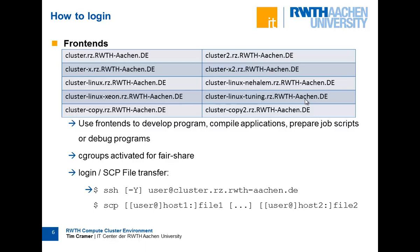We also have two special-purpose front-ends: cluster-copy and cluster-copy2. As the name suggests, these are intended for copying data — for example, if you want to copy data within the cluster or transfer large chunks from external locations. Use these front-ends because they have better network capabilities. You can log in with SSH from Linux, or use PuTTY or Xwin32 for a graphical session from Windows.